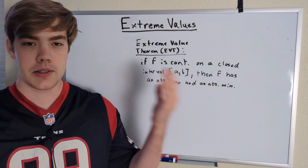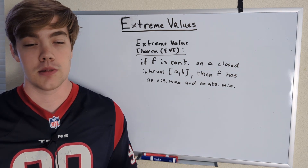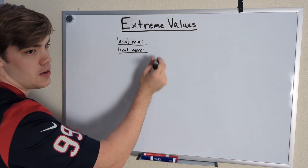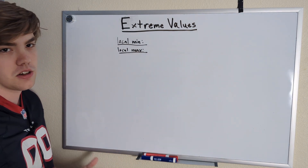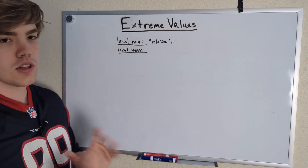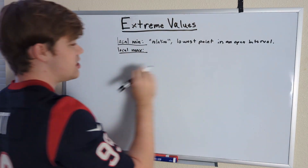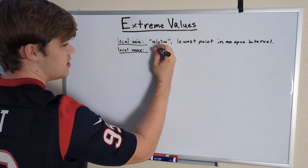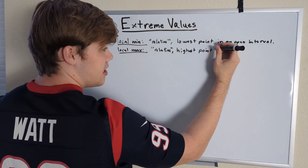We've already talked about absolute maximums and minimums, but what about local maxes and mins? These are also both known as relative minimum and maximum, by the way. Local is just a more common name and a little shorter. The local minimum, or relative minimum, is the lowest point in an open interval. And similarly, the local maximum, or relative maximum, is the highest point in an open interval.